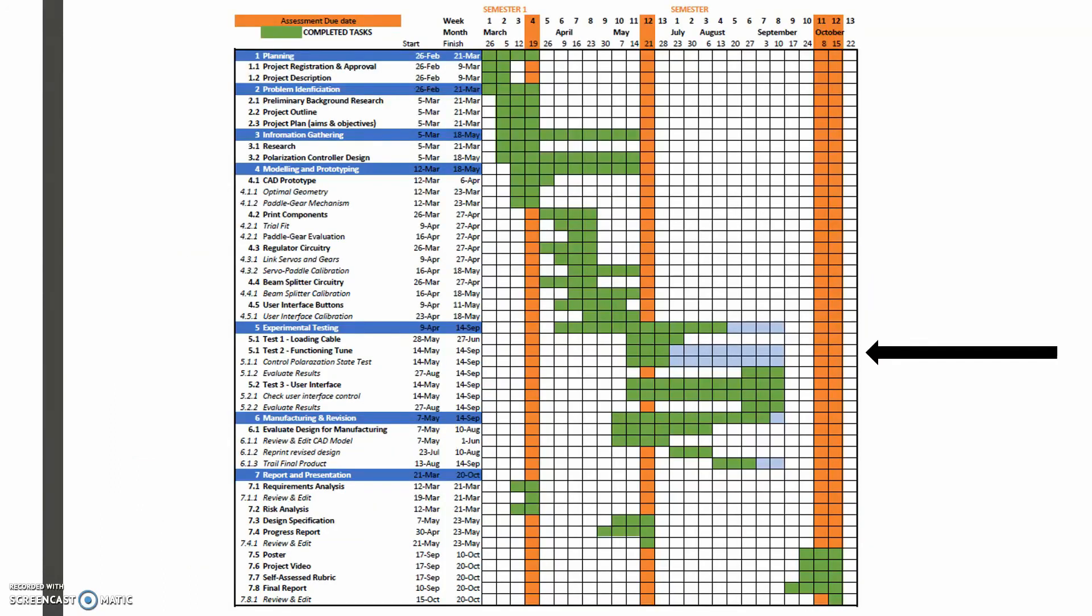This final Gantt chart represents the total progress I have achieved over the course of the year. As you can see, I never fully finished the testing. Many delays in building hardware and printing components led to the programming of a functioning tuned state unsatisfied. As you saw in the video, I also accidentally fried two servos. This unfortunately led to the final design never being fully trialed.